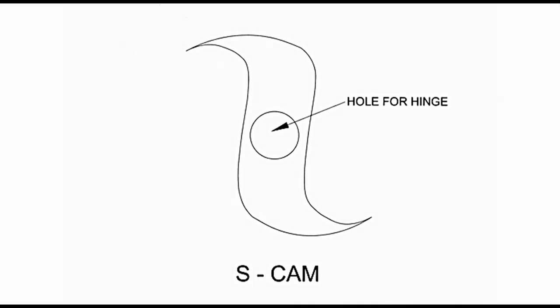S-cam: This is a cam with an S-shape, hinged in the middle and able to move about this hinge. Upon application of brakes, as the slack adjuster rotates, the S-cam also moves about the hinge and causes pushing of the brake shoes, creating frictional contact between them and the wheel drum. Upon release of the brake pedal, the S-cam moves back about the hinge, brake shoes return to original position, and frictional contact between them and the wheel drum is lost.